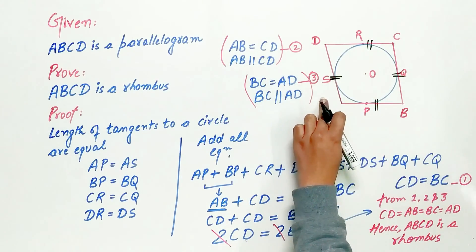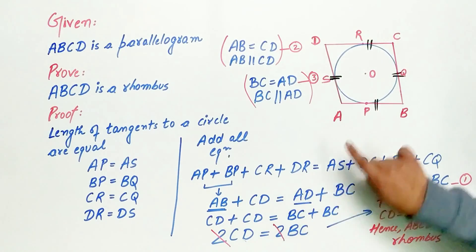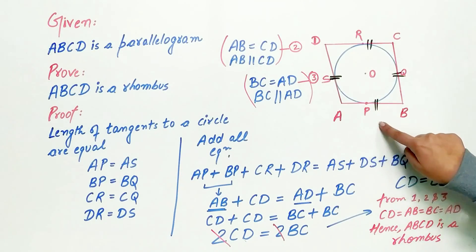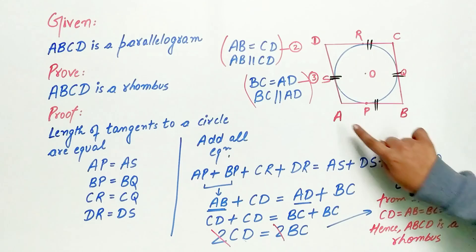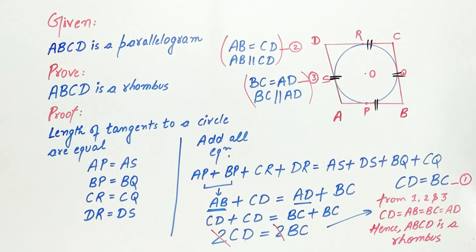Hence, ABCD is a rhombus. And this brings us to an end of this question.